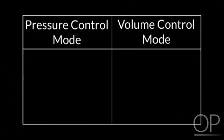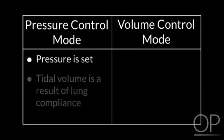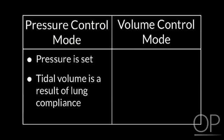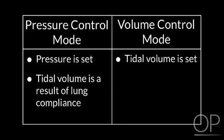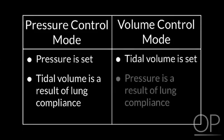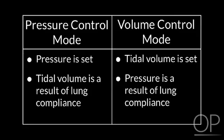Pressure control versus volume control — what's the difference? In pressure control, the pressure is set, and the volume the patient receives is a result of his lung compliance. In volume control, it's the other way around: a certain volume is set, for example an inspiratory volume of 500 cc, and the pressure required to deliver that volume is then a result of the patient's compliance. The important difference between both is the shape of the inspiratory flow.